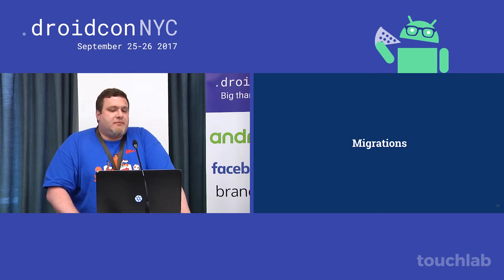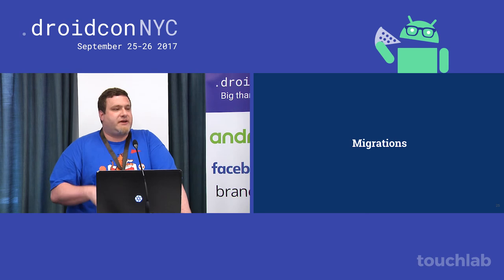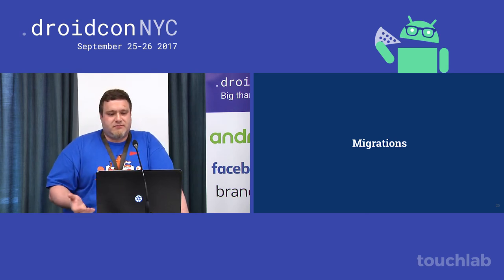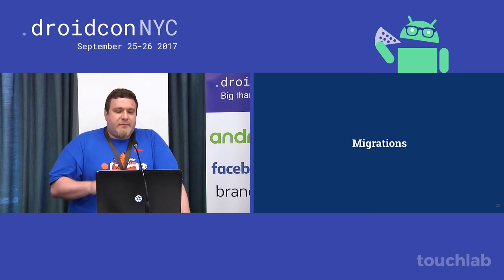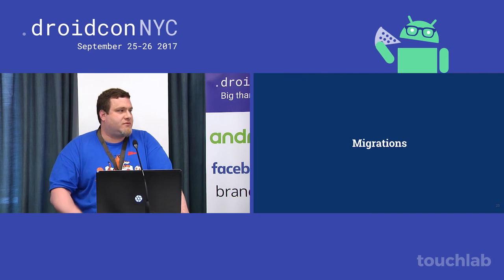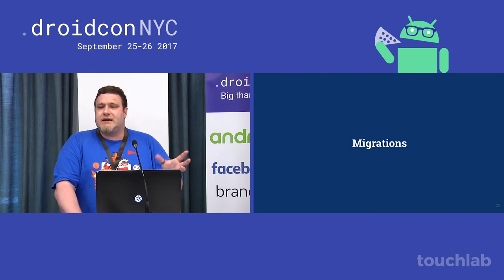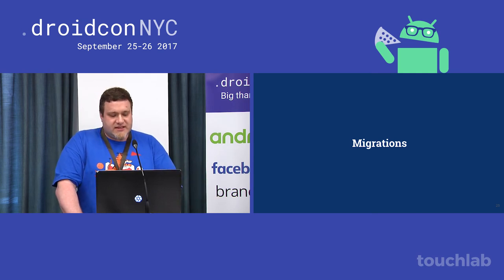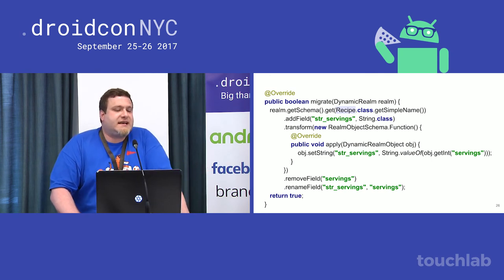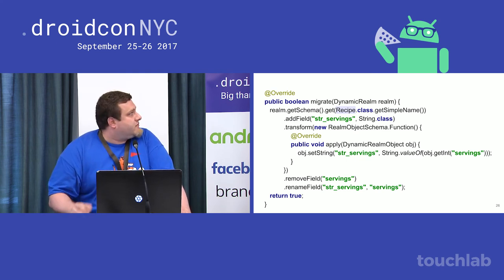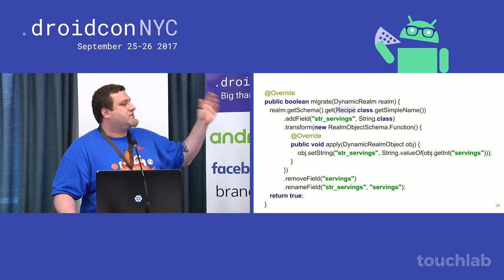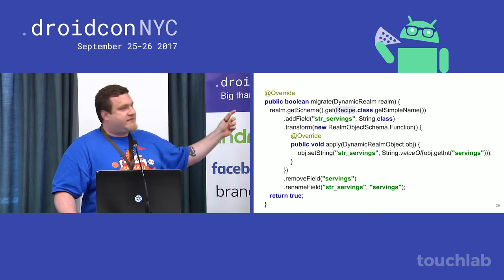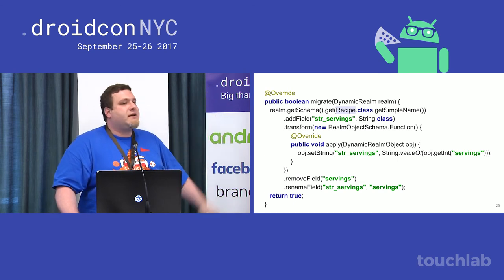One more tricky aspect of Realm: migrating data. As your schema changes, you have to do migrations — it's not a unique pain point to Realm; pretty much any database system requires this if you care about preserving your users' data. But Realm can make it a little tricky because hiding the schema behind objects makes it harder to realize the implications of what you're doing. Here's a sample migration from our code base where we had to migrate our servings field from being an integer to a string: you add the new string field, run a transform to copy the value from the old integer field, remove the old field, then rename it.